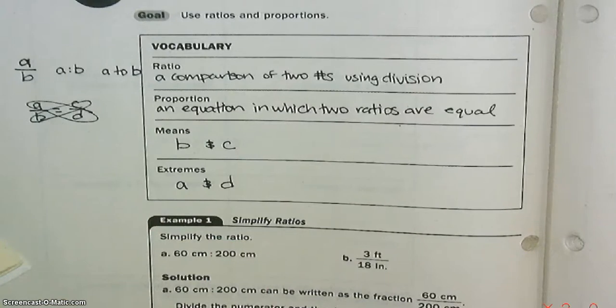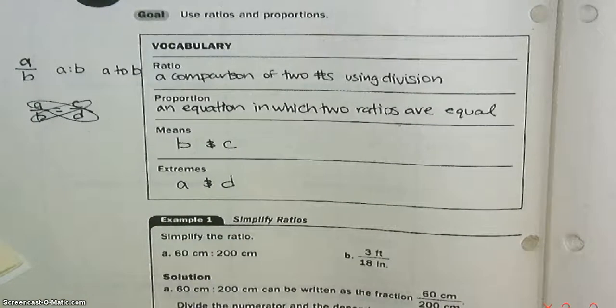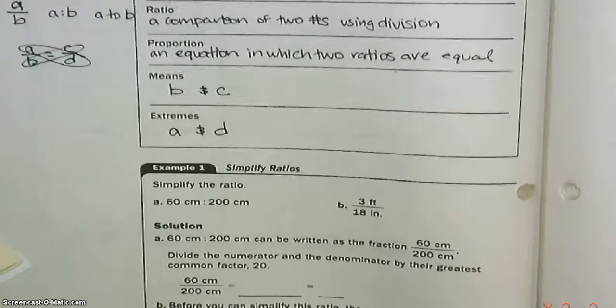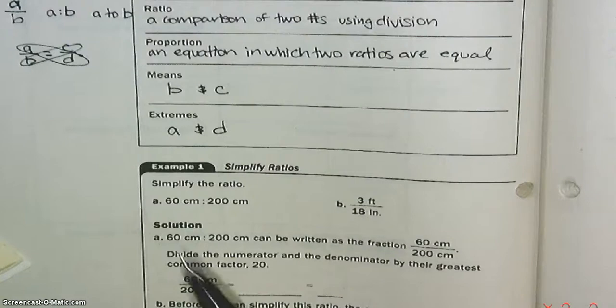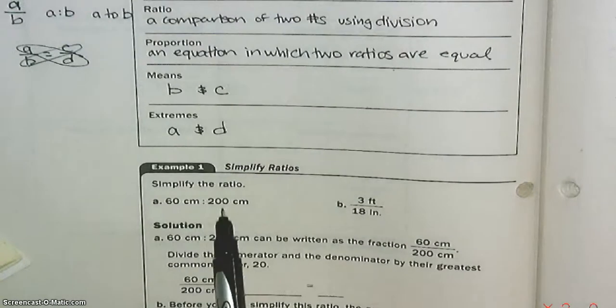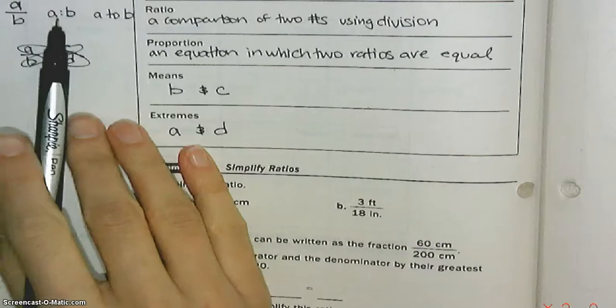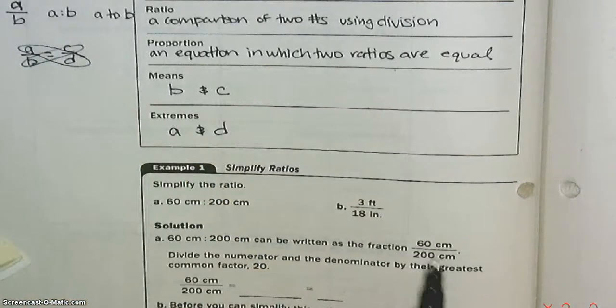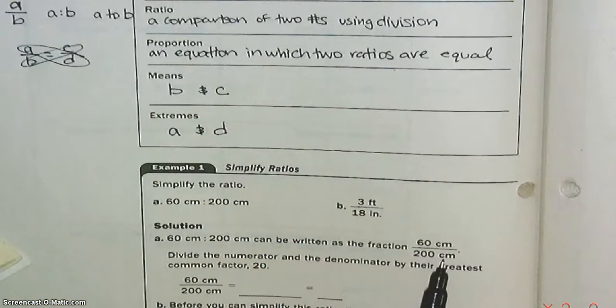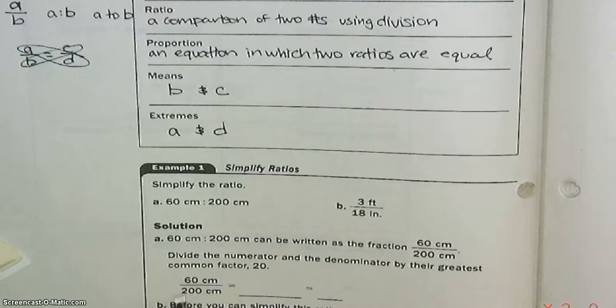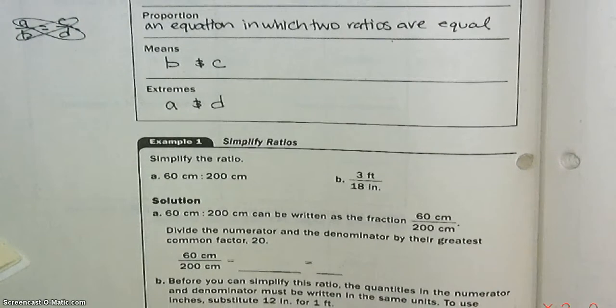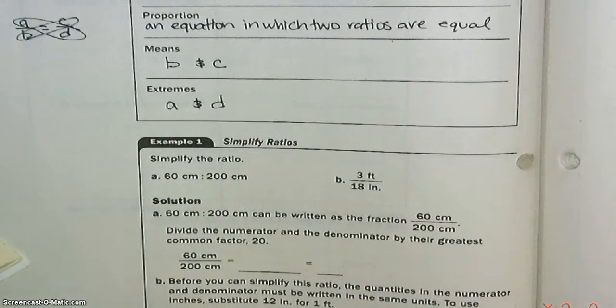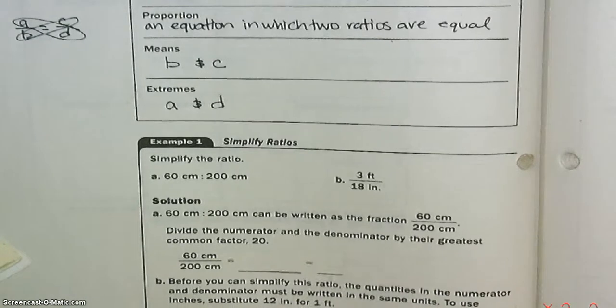Let's get some practice on ratios and proportions. Simplify the ratio 60 centimeters to 200 centimeters. That's another way to write a ratio. We can also write it as division. We're going to put 60 over 200. Now we just need to simplify this. It's like reducing a fraction. So what goes into both 60 and 200?